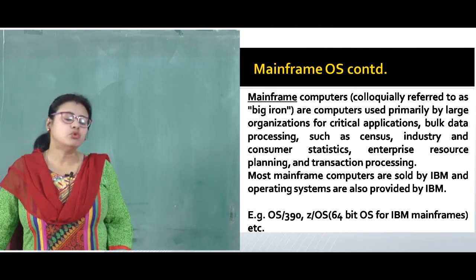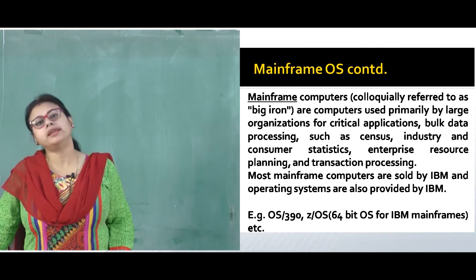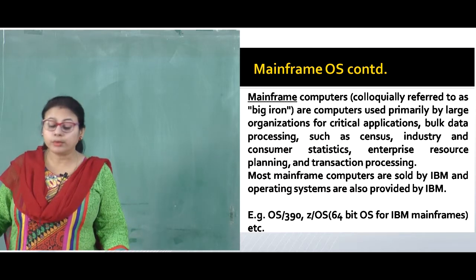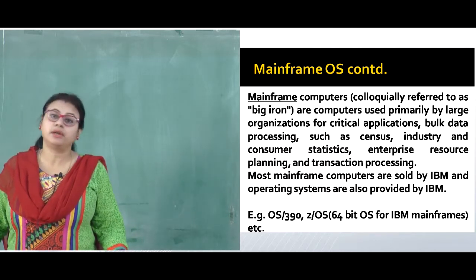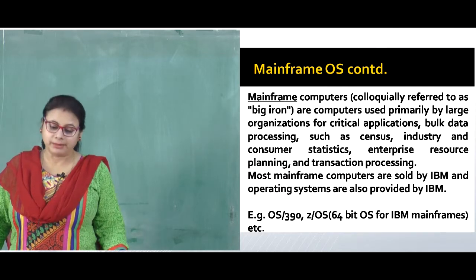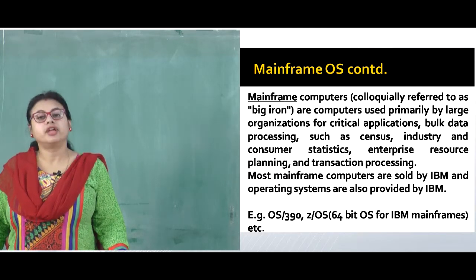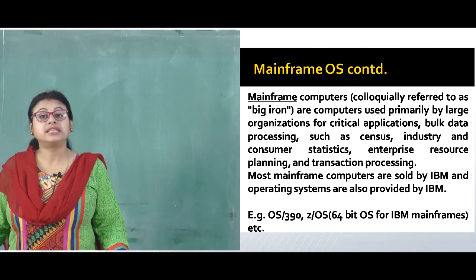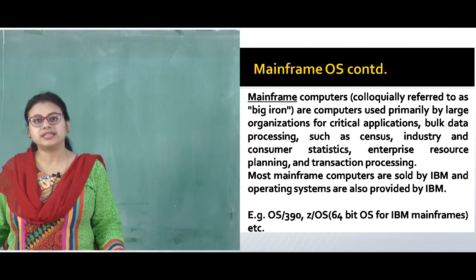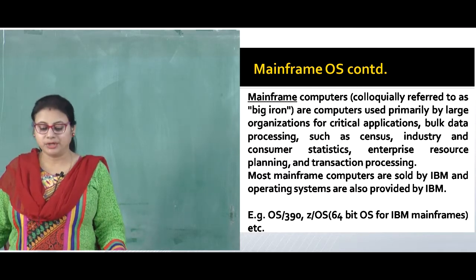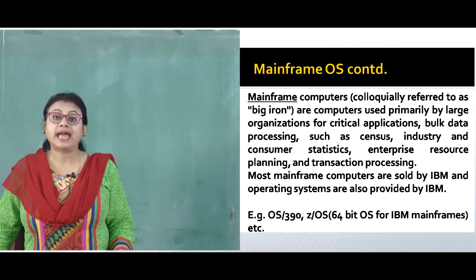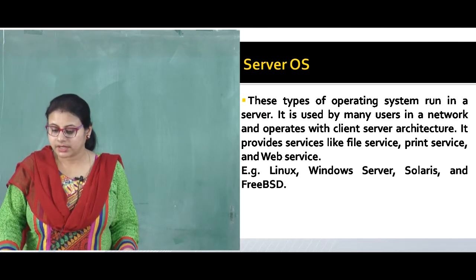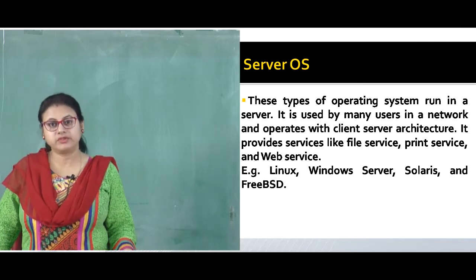Most mainframe computers are sold by IBM — they are the pioneer. The operating systems for mainframe computers are also provided by IBM. Examples of mainframe operating systems are OS/390 and z/OS. z/OS is the 64-bit operating system for IBM mainframes and is the successor to OS/390.